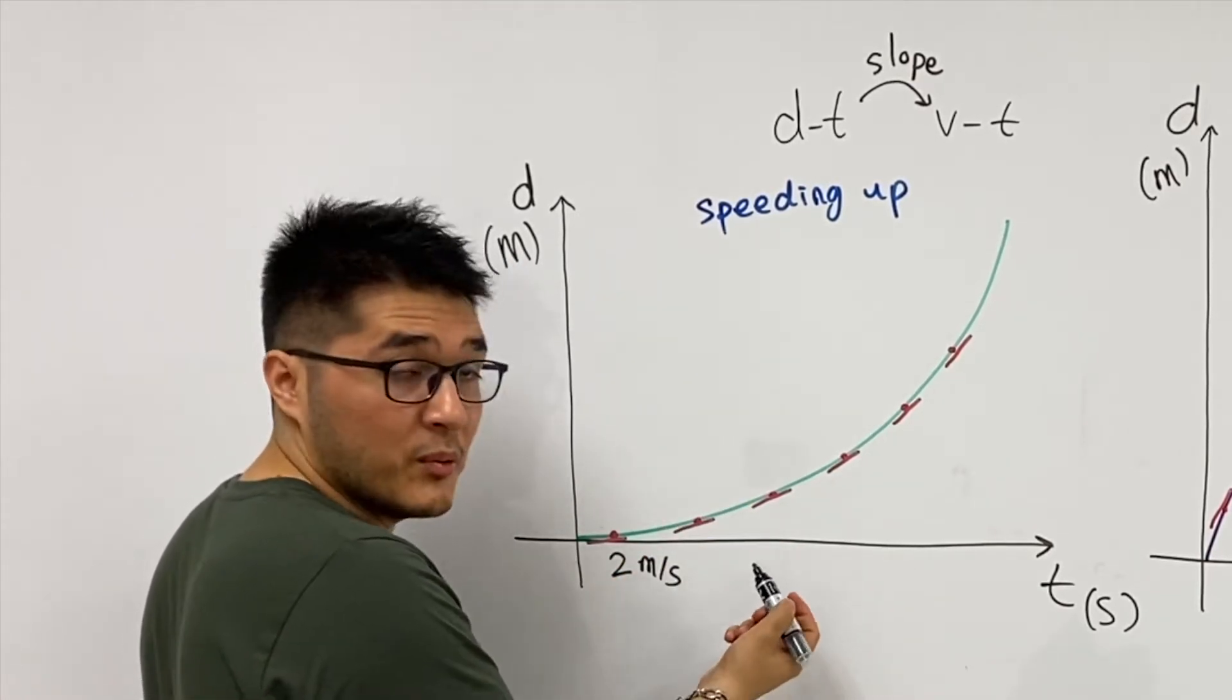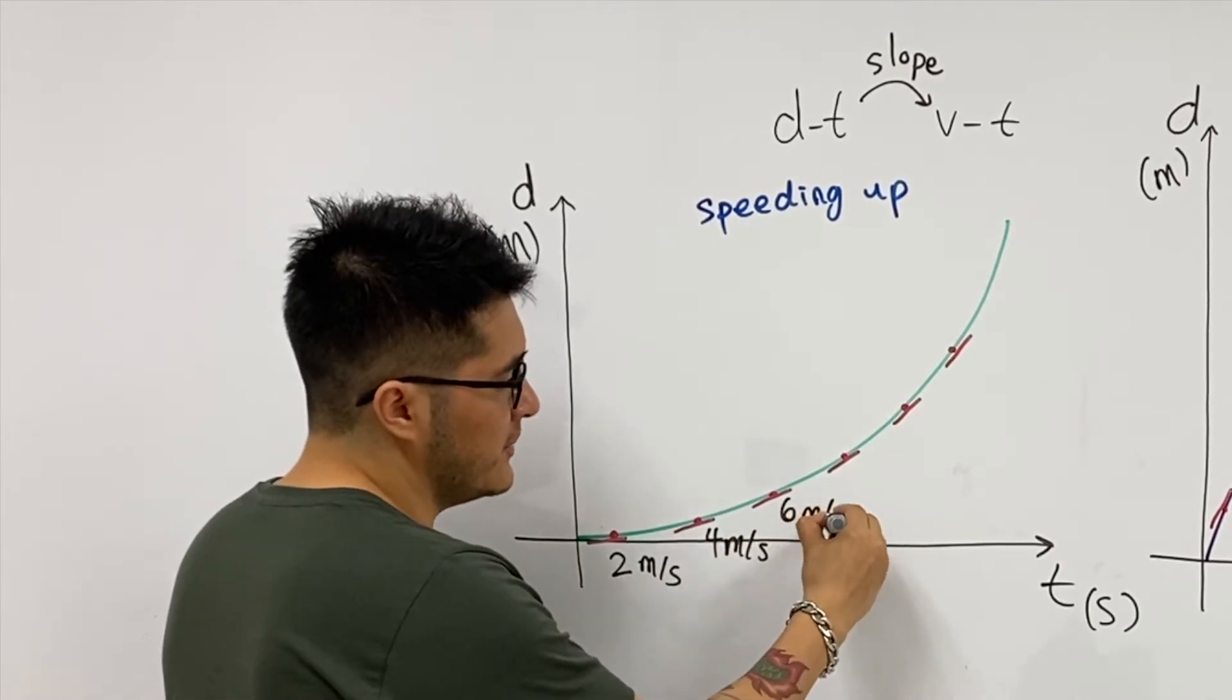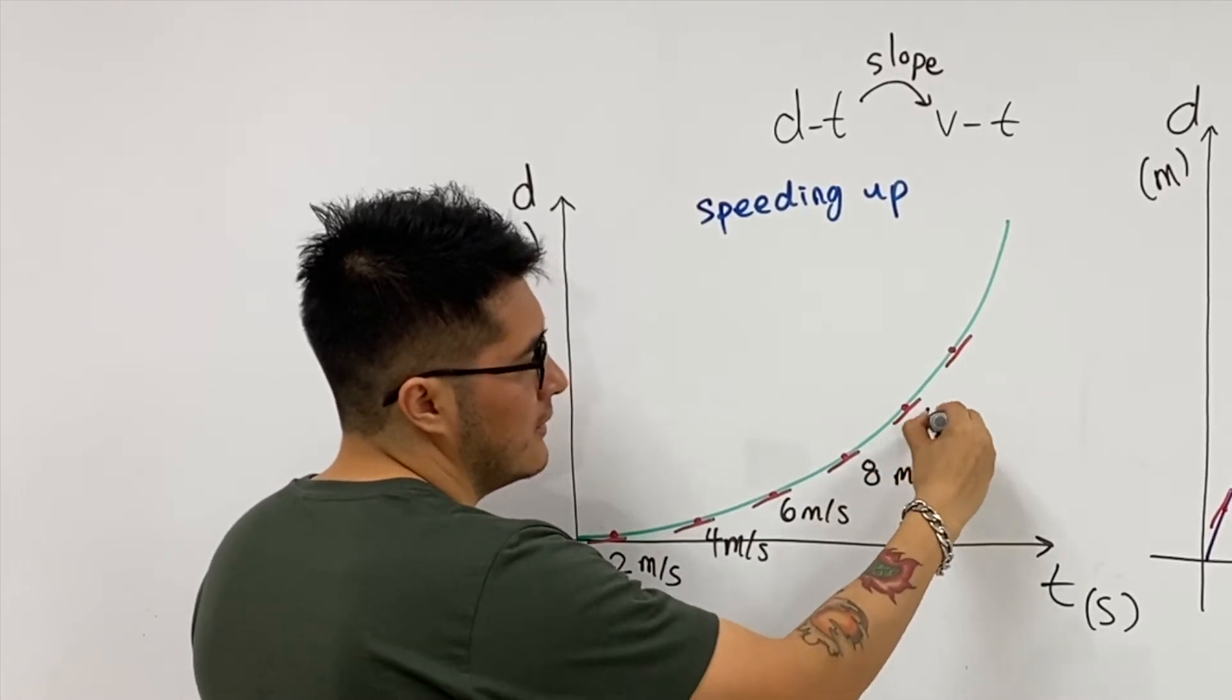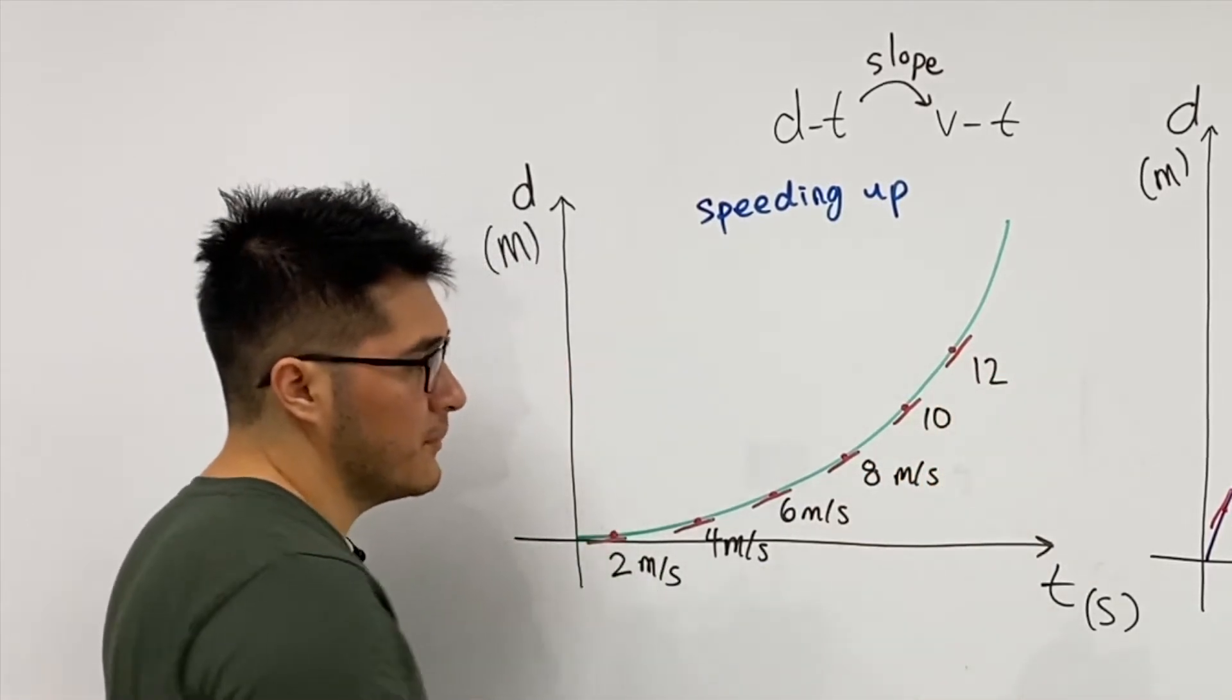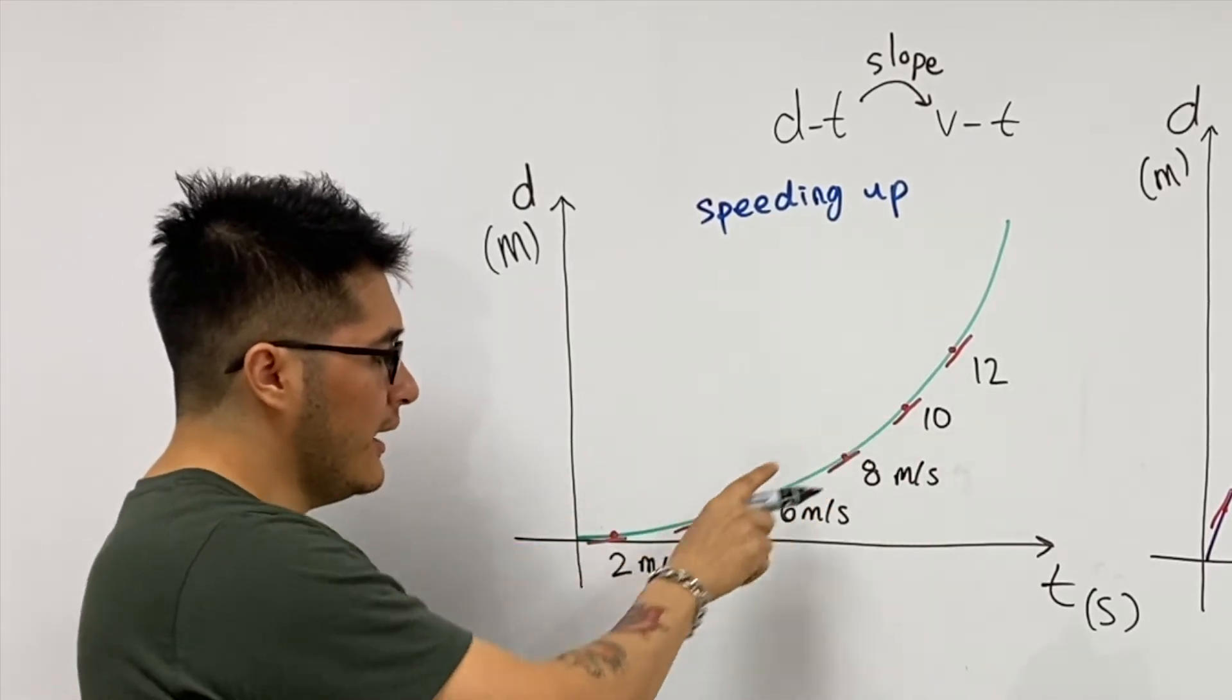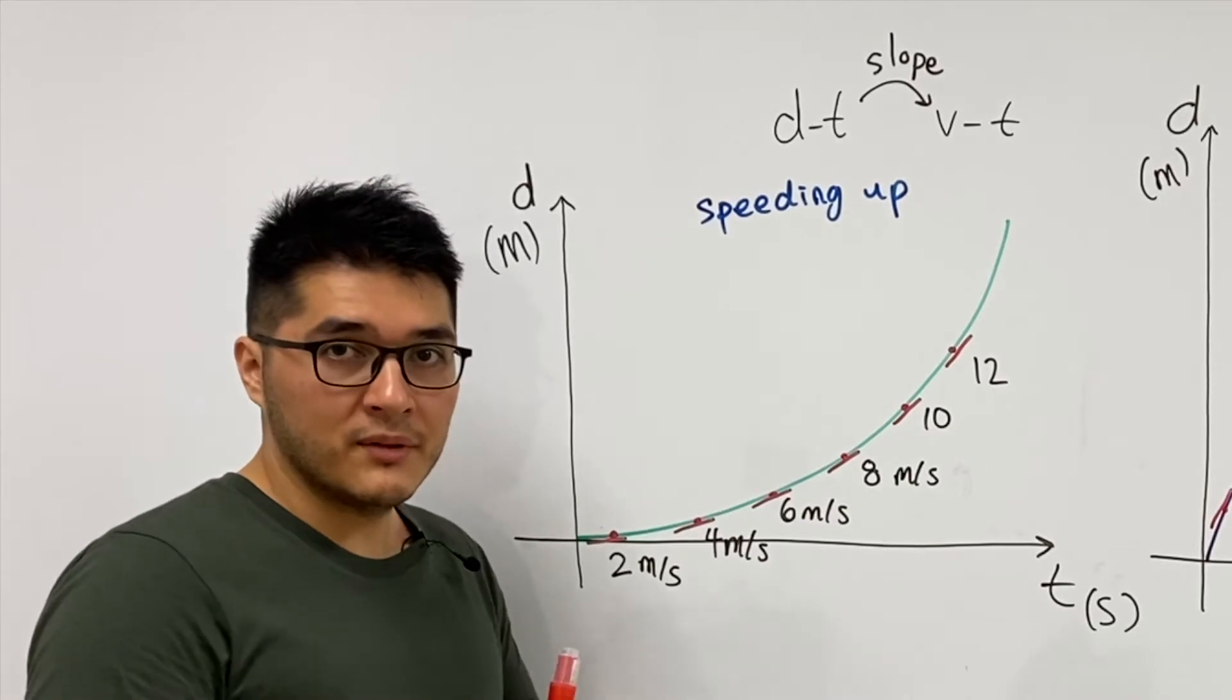Then it gets steeper with time, so this is going to be 4 meters per second, 6 meters per second, 8, 10, 12. Now we can confidently say, okay, this object is speeding up, and because the slopes are all positive, it's speeding up in the positive direction.